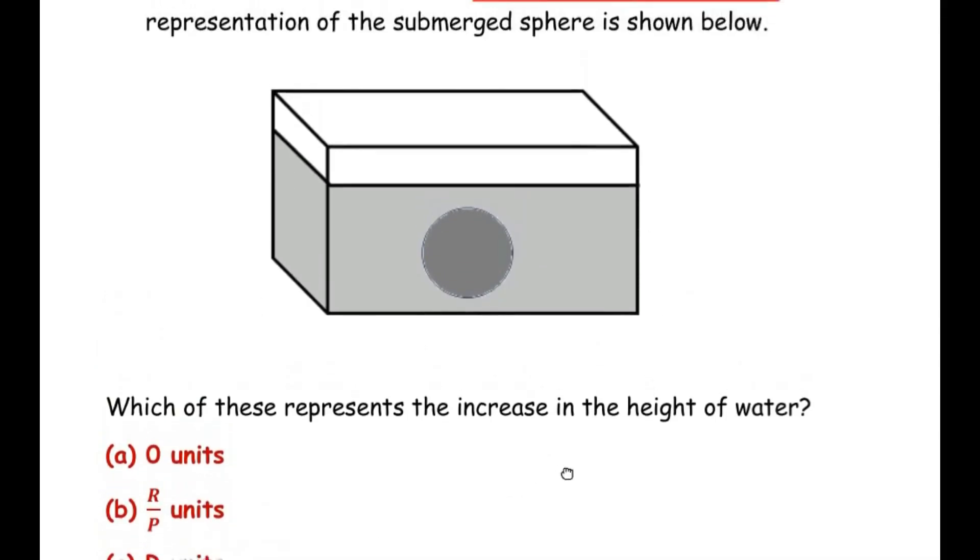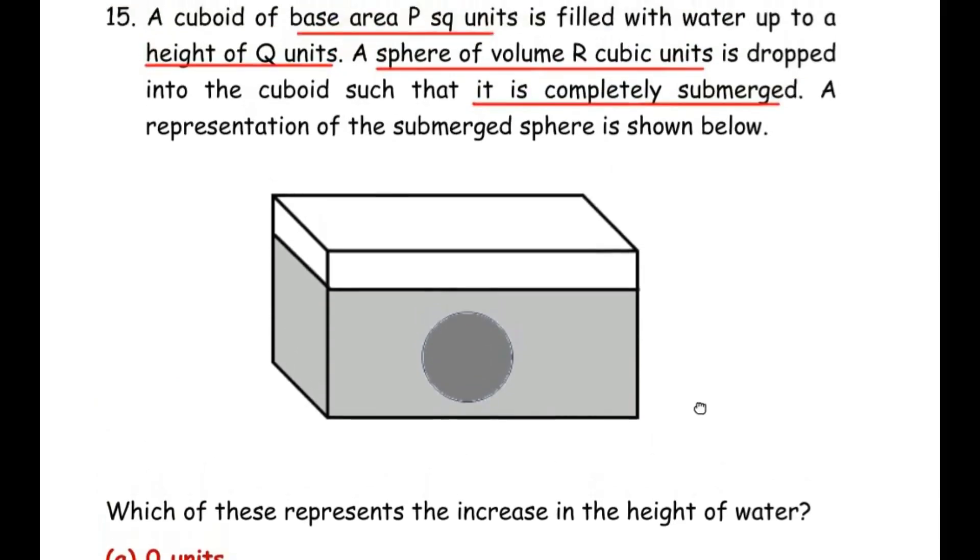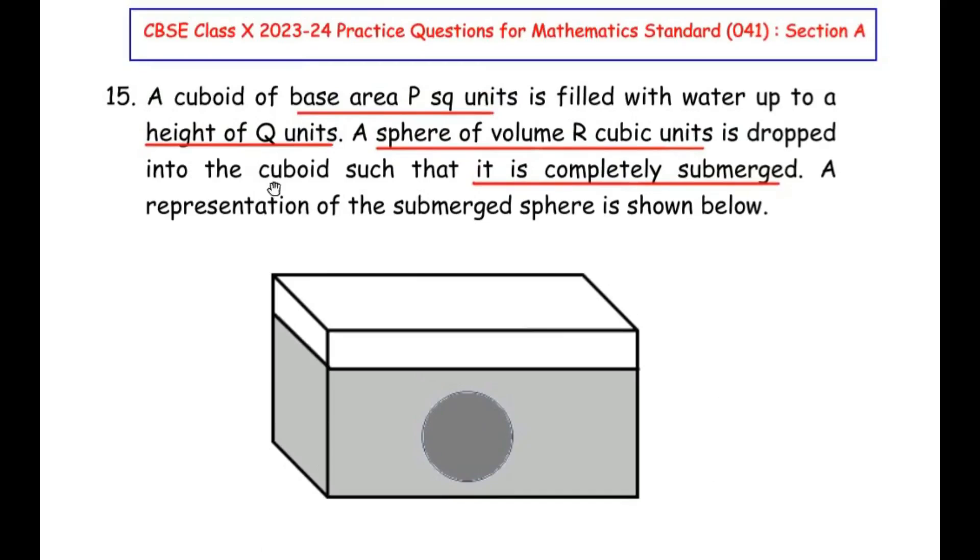Now let us understand the question first with respect to the given data. The cuboid of base area P units. Now this is the cuboid given. Let me show you the base of this cuboid. So you can see this is the base of the cuboid and it has been given as P square units. So let us write here P.